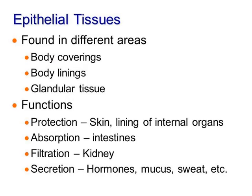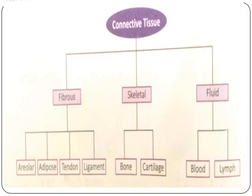Whatever we have discussed about epithelial tissue — where it is found and what its function is — is summarized in this slide. Now let us look at the different types of connective tissues. Connective tissues are divided into three parts: fibrous, skeletal, and fluid.